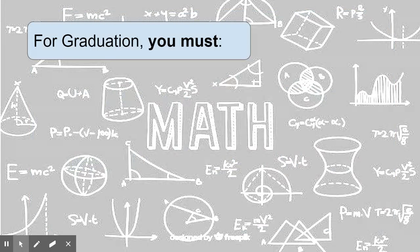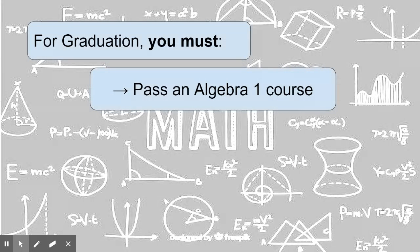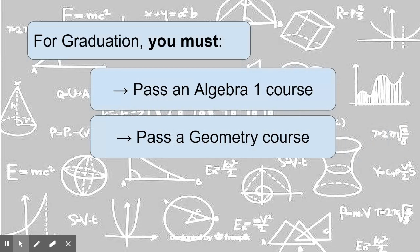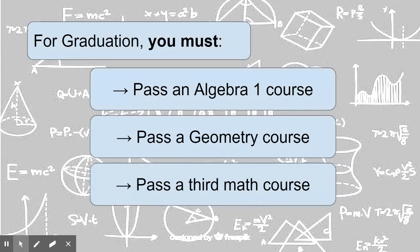Just a disclaimer, to graduate from high school, you must have three math credits. The first one is Algebra 1, the second one is a geometry course, honors or regular, and the third is a math course which you are currently taking. So assuming you pass this course, you have some options.